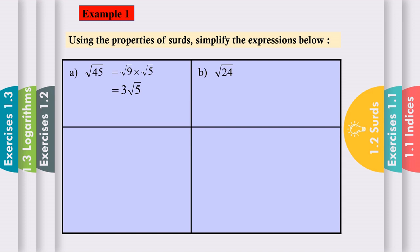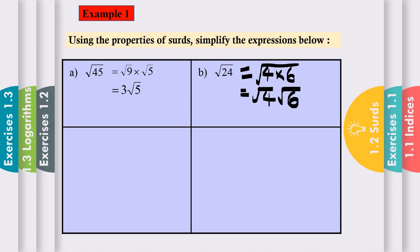Example b: square root of 24. Square root of 24 can be written as two numbers — square root of 4 times square root of 6. Then we simplify: it's going to be square root of 4 times square root of 6. The actual value of square root 4 is 2, so the answer is 2 square root 6.